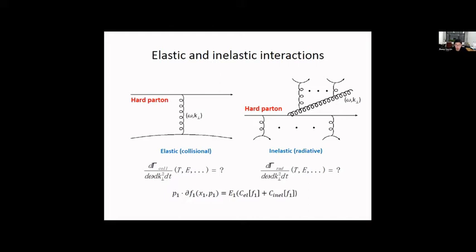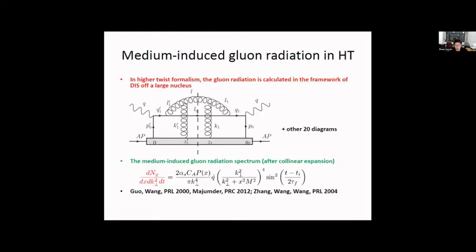For the radiative process, we use the high-twist formalism for medium-induced gluon radiation. In the high-twist formalism, the spectra are calculated in the framework of DIS off a large nucleus—an electron scattering with the nucleus. For the heavy quark calculation, we exchange a virtual boson, strike a light quark that becomes a heavy quark, and this heavy quark emits a gluon. During this emission process it can rescatter with the medium. In a current calculation, we have one initial scattering and another rescattering, giving about 21 diagrams to calculate.